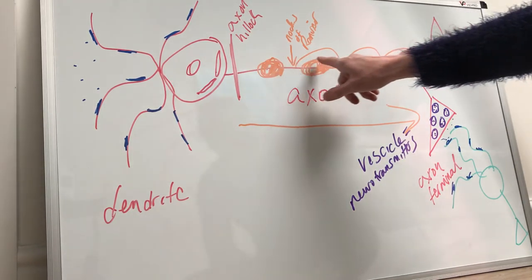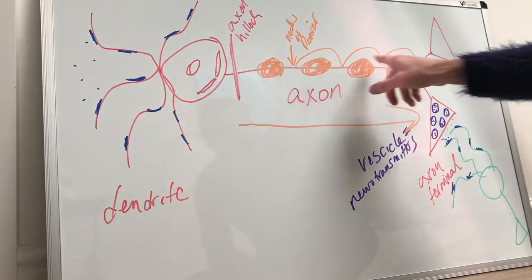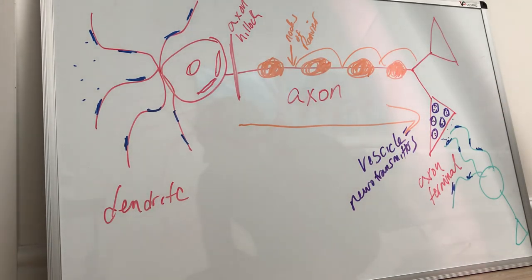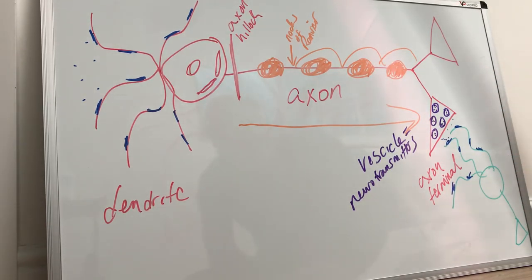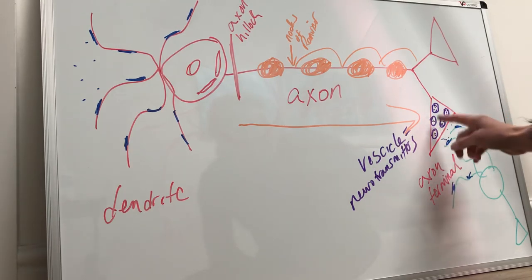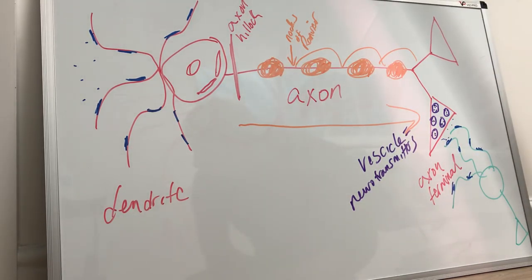When talking about carrying an action potential along an axon, that is called propagation or conduction. Don't get confused by these terms: if asked how action potential is propagated, that refers to how it is carried along the axon itself. But if asked about neuronal transmission, that refers to communication between two separate neurons, which uses this chemical process that is then transduced to an electrical process at the axon hillock. I'll go over that in more detail later.